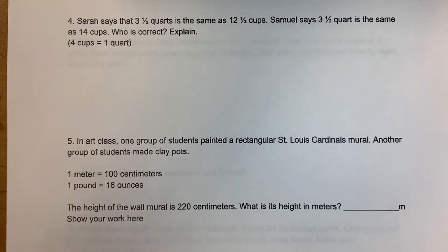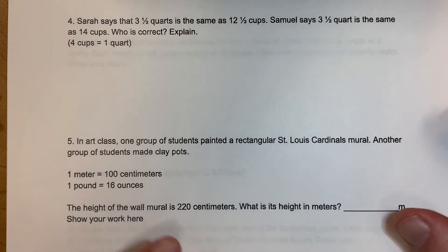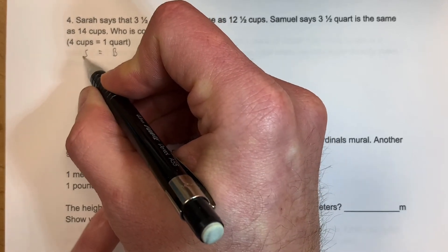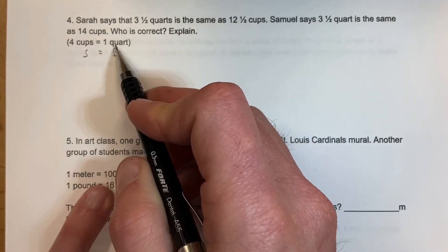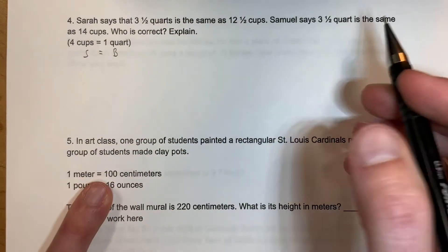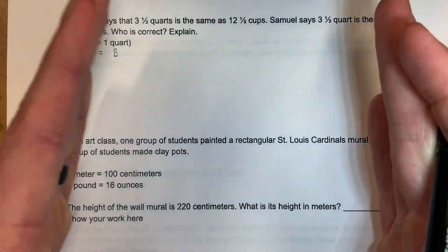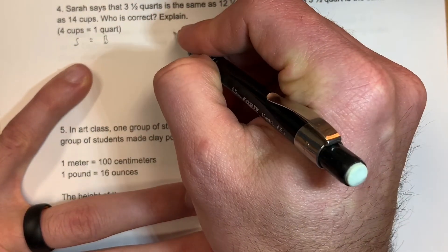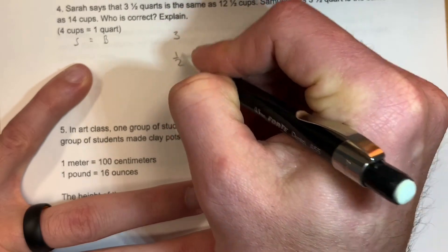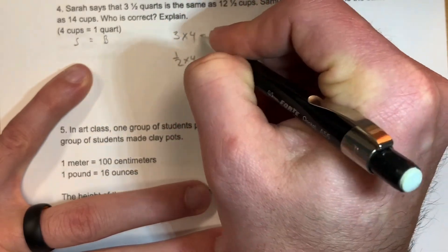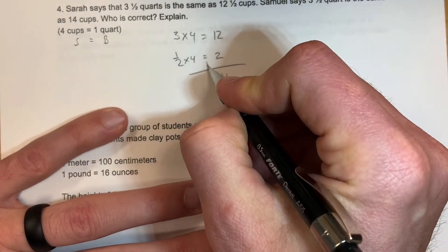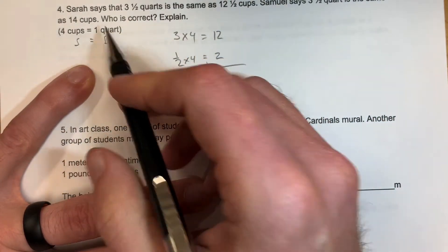Sarah says three and a half quarts is the same as 12 cups; Samuel says three and a half quarts is the same as 14 cups. Who is correct? Quarts is the big one, cups is small — big to small, we multiply. So we take 4 times three and a half. Breaking it down: 3 times 4 is 12, and one half of 4 is 2. Add those together and you get 14. Samuel is correct.